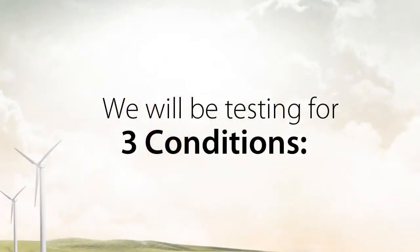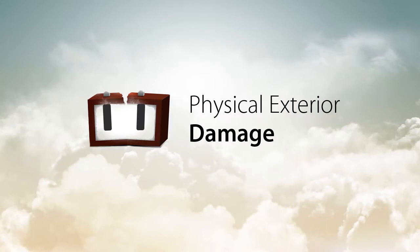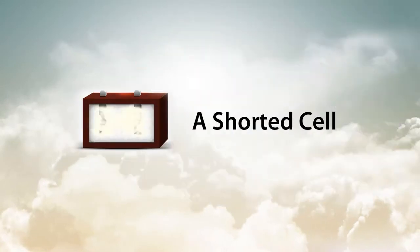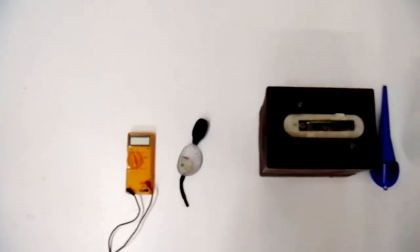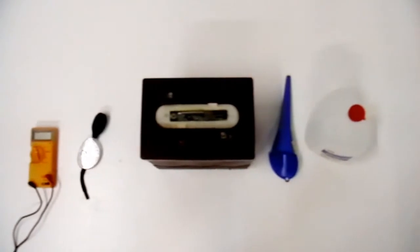We will be testing for three conditions: physical exterior damage, a short cell, and an open cell. For these tests you will need a voltmeter and a hydrometer. We will demonstrate how to use each of these tools.